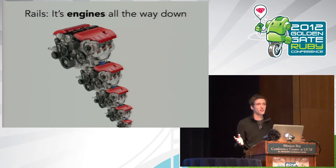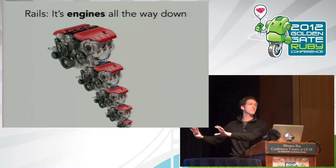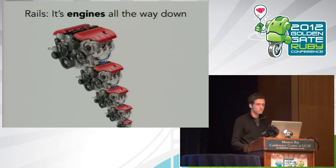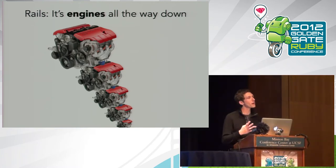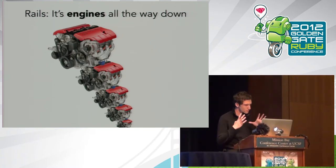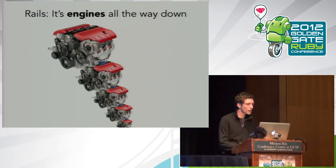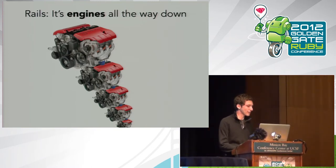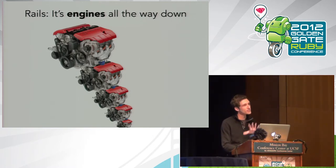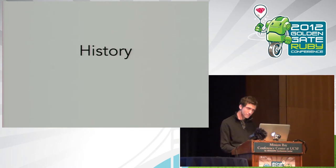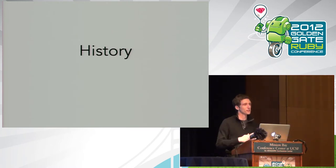With Rails, it's engines all the way down — there are actually Railties underneath, but we'll ignore those for now. Rails engines are this fundamental building block of Rails. I think it's worth taking some time before we get into the technical details to talk about how that architecture emerged through the history of Rails.